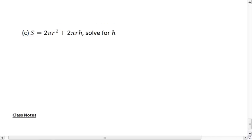Lastly, in example C, we're given S equals 2 pi R squared plus 2 pi R H. This, if you remember, is the formula for the surface area of a cylinder.